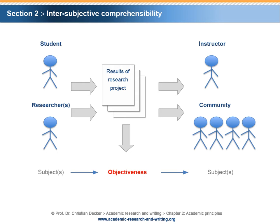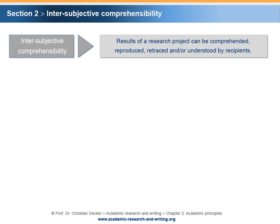This is a misconception. Subjects can only report from a subjective perspective. Although desired, human beings can never achieve objectiveness. Therefore, it is better to use the concept of intersubjective comprehensibility in order to qualify a given research output. It means that what has been researched by one or more subjects can be comprehended, reproduced, retraced and/or understood by one or more subjects that are the recipients of the research results. The principle of accuracy implies providing intersubjective comprehensibility, meaning that the results of a research project can be comprehended, reproduced, retraced and/or understood by recipients.